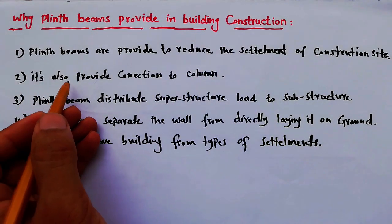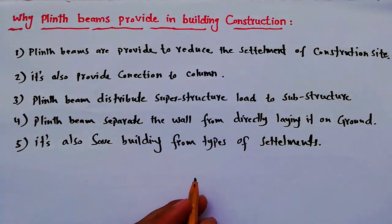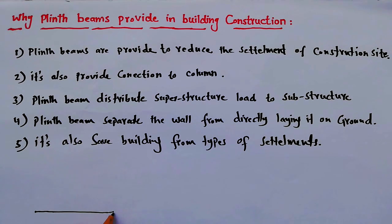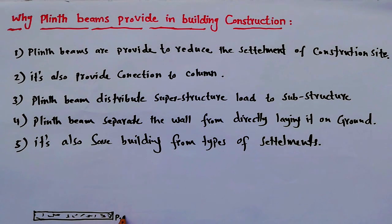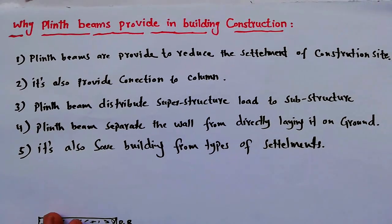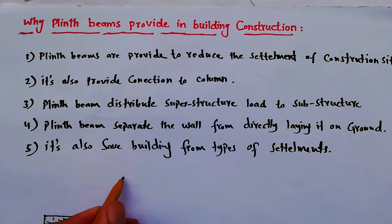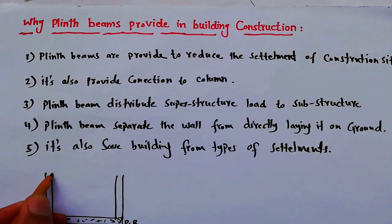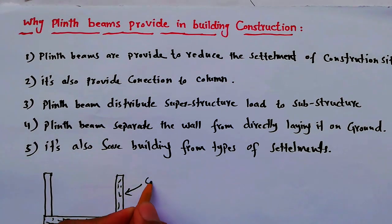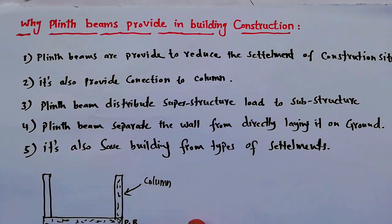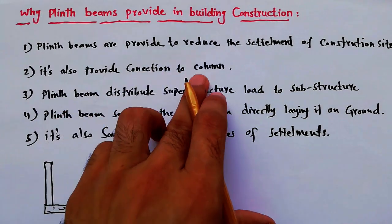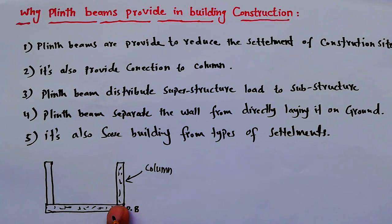Second, the plinth beam also provides connection to columns. Suppose this is the plinth beam cross-section — an RCC plinth beam labeled PB. The plinth beam connects the columns on either side. So this is the plinth beam and these are the columns, and it makes a connection between them.